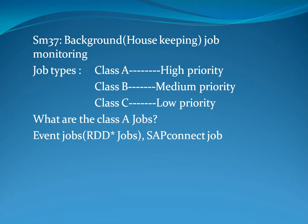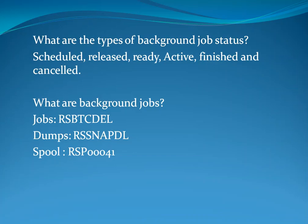SM-37 T-code is used for background job monitoring. Job types are: Class A (high priority), Class B (medium priority), and Class C (low priority). Class A jobs include event-driven jobs such as RDD* jobs and SAP Connect jobs. Background job statuses are: Scheduled, Released, Ready, Active, Finished, and Cancelled. Examples of background jobs include RSBTCDL, RSSNAPDL, and RSP00041.